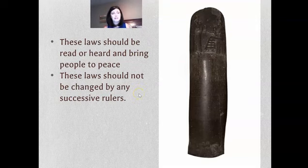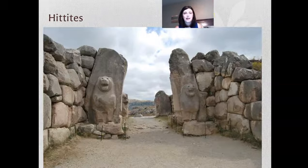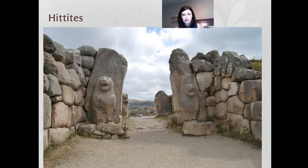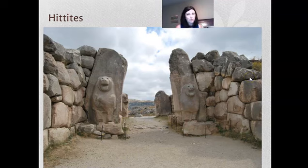The Hittites came next, bringing their Lion Gate made of stone. They were one of the only people who had iron and could work with rock, which allowed them to take over the Babylonians. However, trying to rule Mesopotamia from far away didn't work out well, so they weren't around very long.